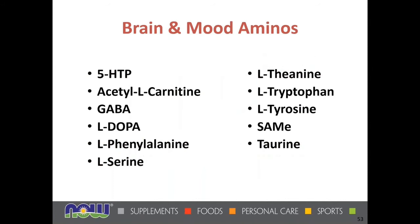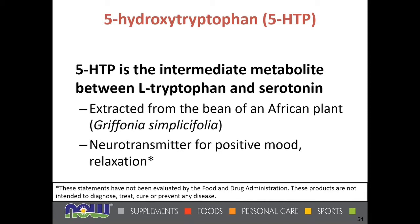Now let's talk about brain, memory, and relaxing mood amino acids. These include 5-HTP, acetyl-L-carnitine, GABA, L-DOPA, L-phenylalanine, L-serine, L-theanine, L-tryptophan, L-tyrosine, SAMe, and taurine.